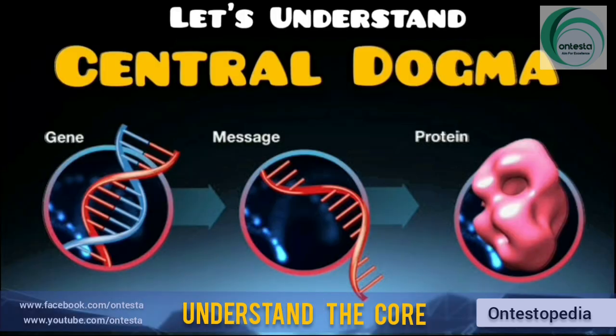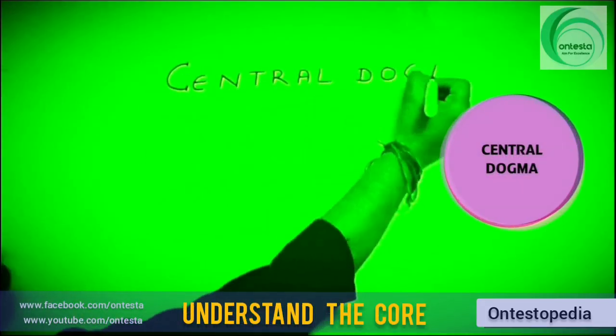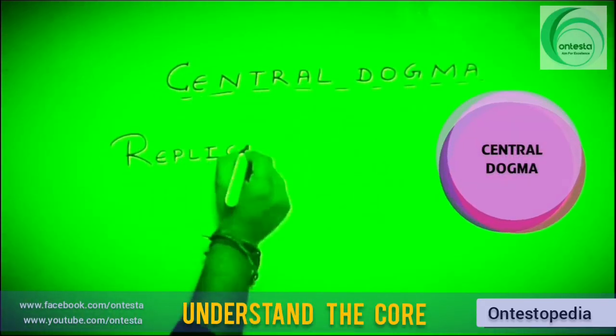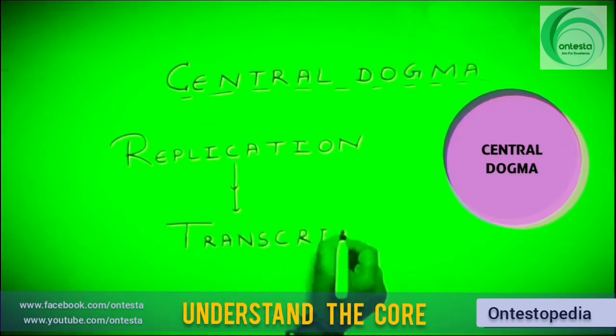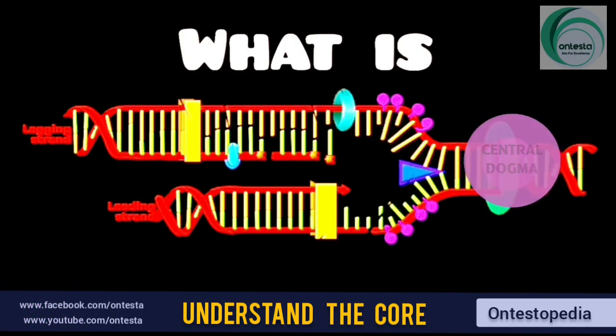To understand the processes of DNA, let's understand the central dogma. The central dogma includes 3 processes: (1) replication, or copying of DNA itself; (2) transcription, or making of RNA; and (3) translation, or making of protein.